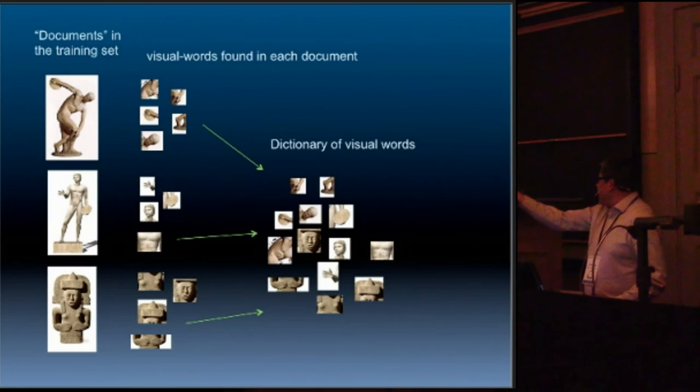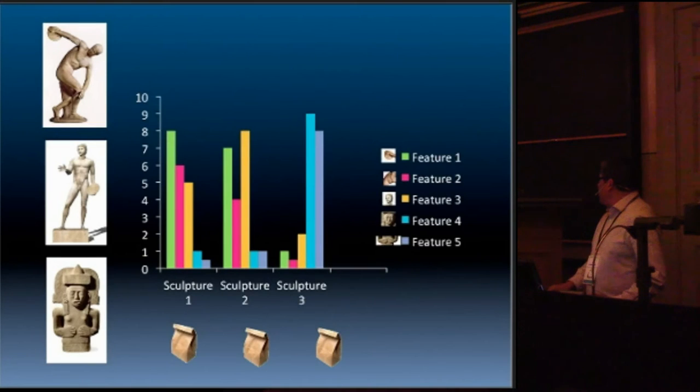Just to give you an idea: you have features that are common in certain kinds of sculptures, and you create a dictionary of all those features. Then with those dictionaries, you can see, for example, this sculpture, how many of feature number one it has, how many of feature two, etc.